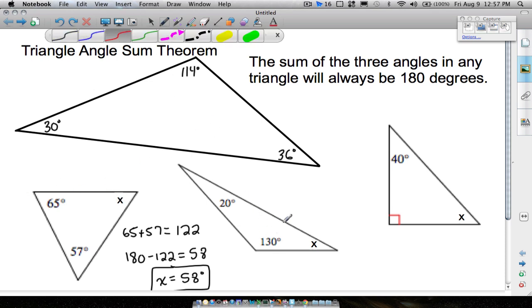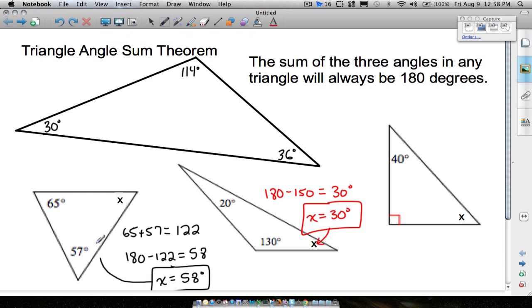Now, this second triangle, same idea. We can add these two angles together. 130 plus 20 is going to be 150. If we take 180 minus 150, you get 30 degrees. So therefore, x is equal to 30 degrees in this one right here. Maybe I should draw some arrows to point out which problem goes with which one. All right, so there's two examples.